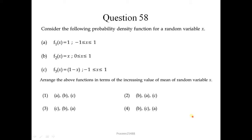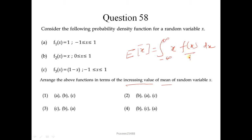Question number 58. Consider the following probability density functions for a random variable X. Arrange the functions in terms of increasing order of mean of the random variable X. To calculate the mean, the formula is E[X] = integral from −∞ to ∞ of x·f(x) dx. Using limits −1 to 1, for function A the mean is 0, for B it is 1/3, and for C it is −2/3. So the increasing sequence is C, A, B. There is no matching option given. This is how you calculate the mean of any PDF.